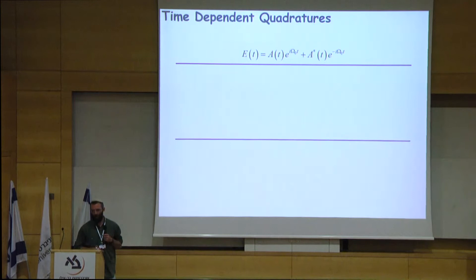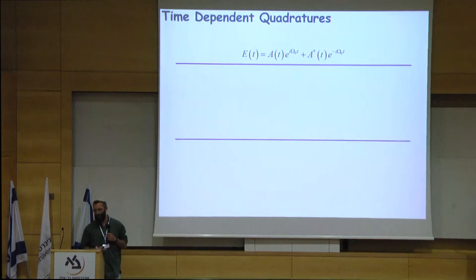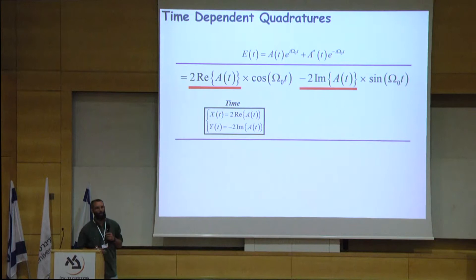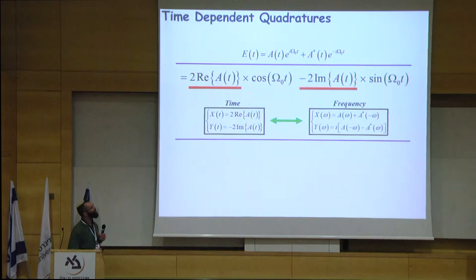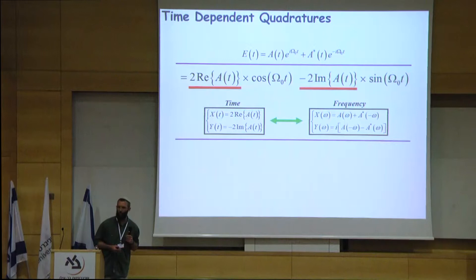I express here the field oscillation using the complex amplitude A. You can quickly show that the two quadratures are simply the real and imaginary parts of the complex amplitude. The frequency components of the quadrature are the symmetrical and anti-symmetrical parts of the complex amplitude spectrum. So a single frequency component of the quadrature is actually a combination of two frequency modes, omega and minus omega, around the optical carrier frequency, which are usually termed the signal and idler modes.